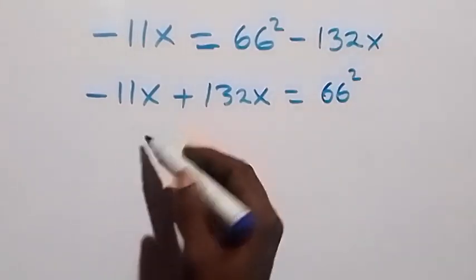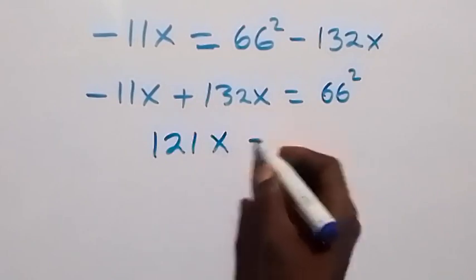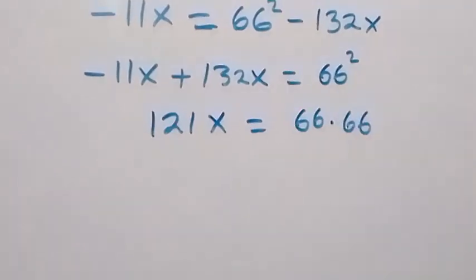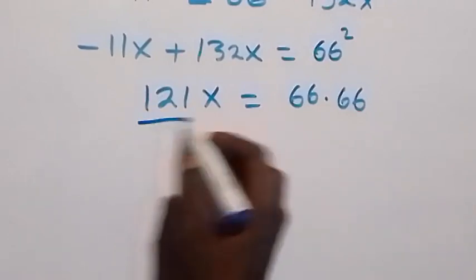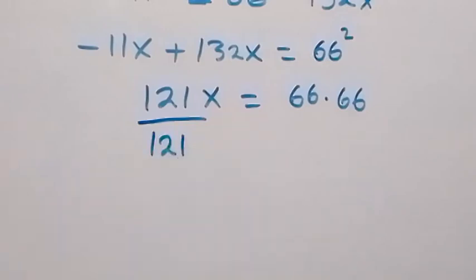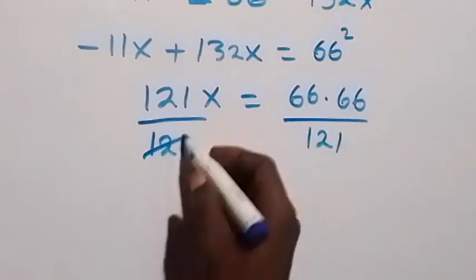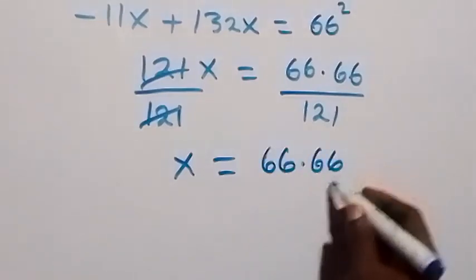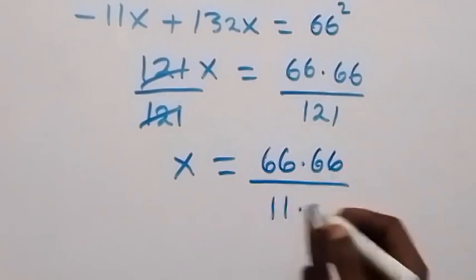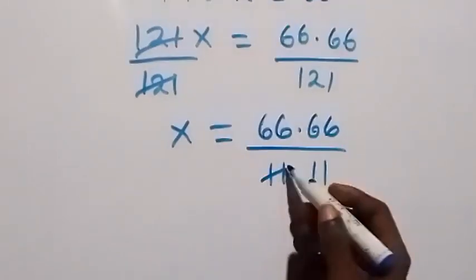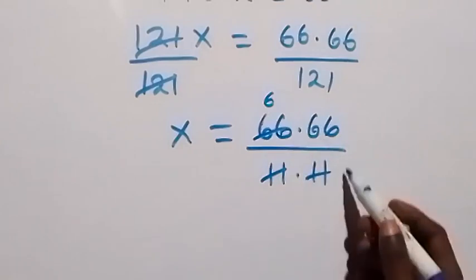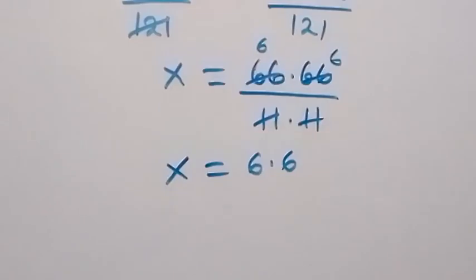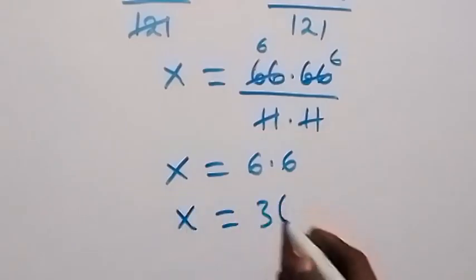132x minus 11x gives us 121x, equals 66 squared, which is 66 times 66. Dividing both sides by 121, and noting that 121 is 11 times 11, we get 11 goes into 66 six times on both factors, so x equals 6 times 6, which means x equals 36.